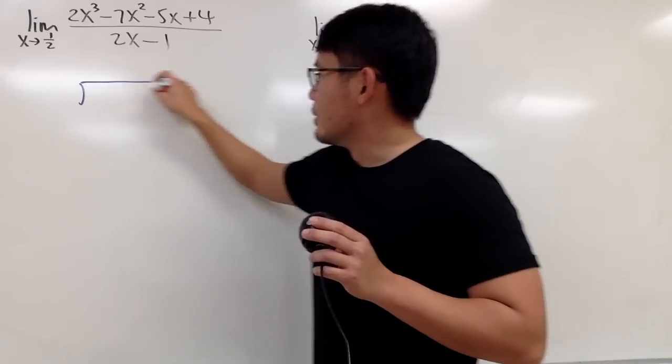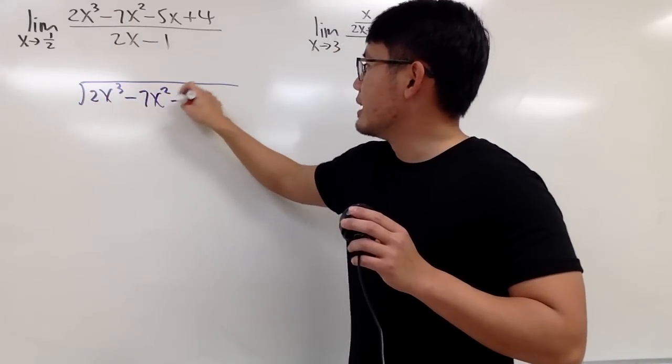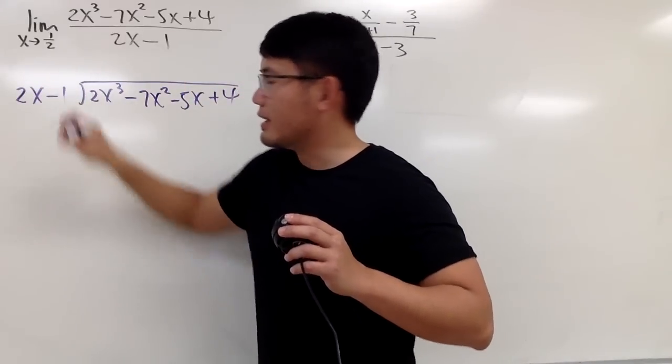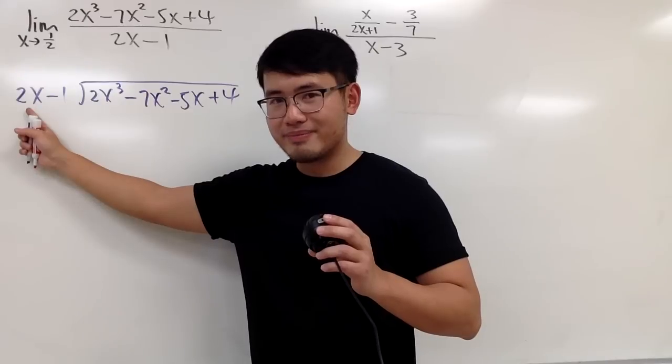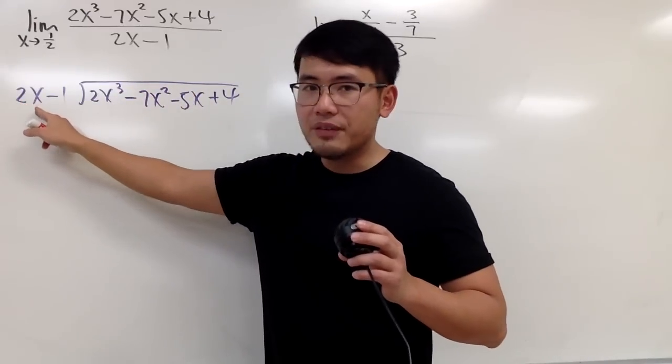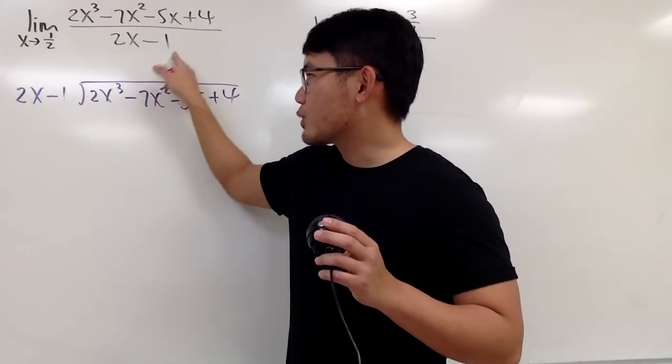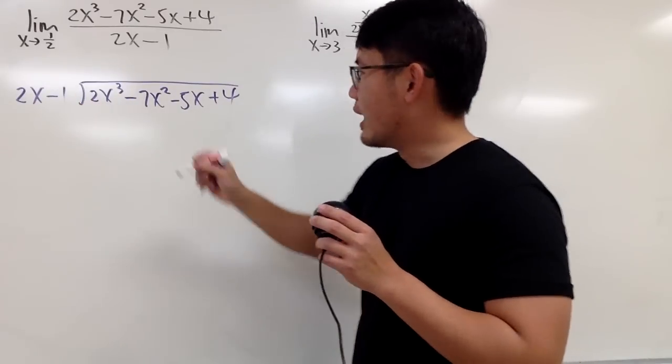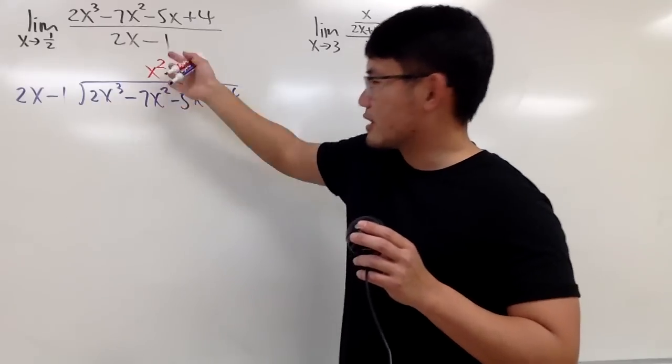So I'll do a long division right here, which is 2x³ minus 7x² minus 5x plus 4. And then on the outside, I'll put down 2x minus 1. And here we go. So compare the first term with the first term right here. You have to ask yourself, what times 2x will give us 2x to the third power? We know 1 times 2 is 2. And then we know x² times x is going to give us x³. Therefore, I need x².